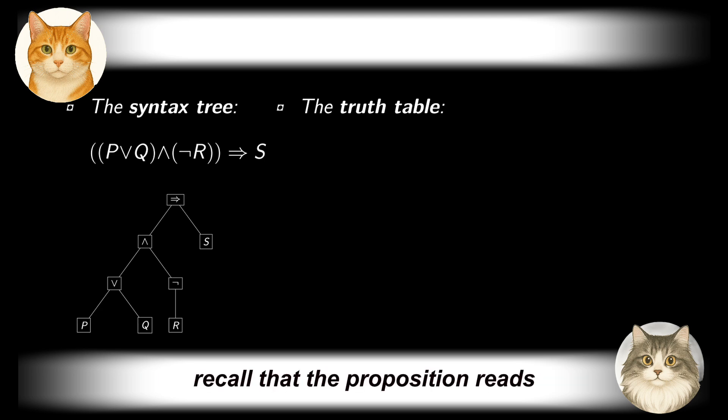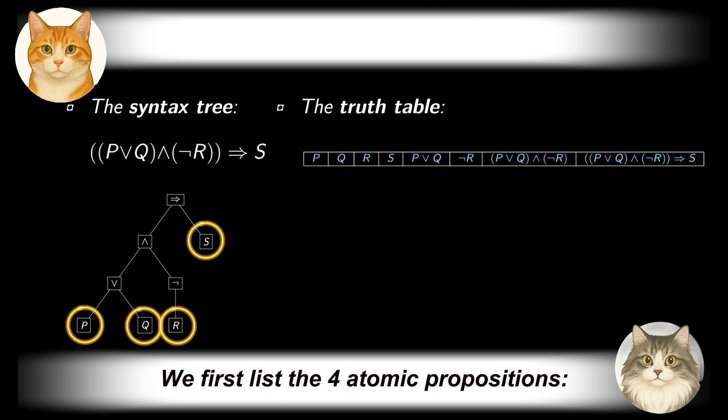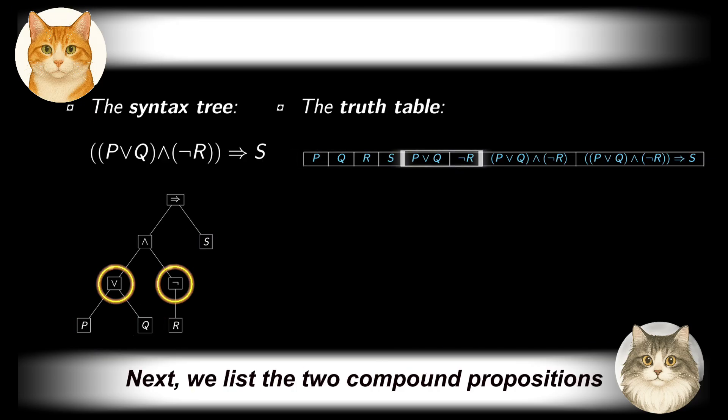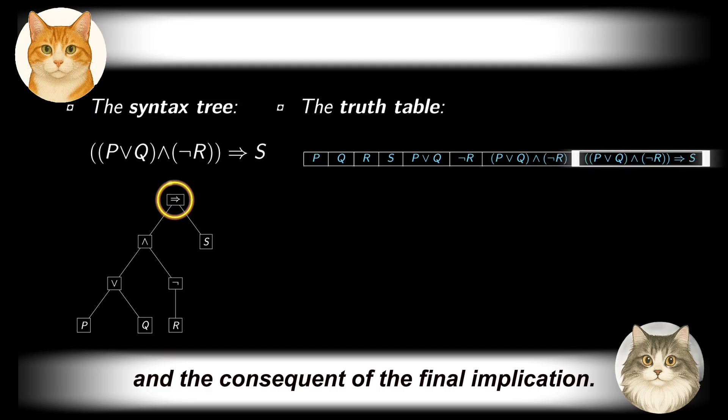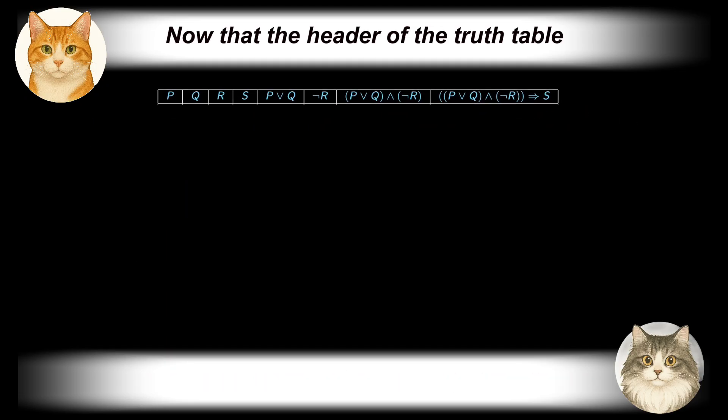Recall that the proposition reads: P or Q and not R implies S. We first list the four atomic propositions P, Q, R and S. Next, we list the two compound propositions at the first level: P or Q and not R. Then, we list the compound proposition at the next level: P or Q and not R, which together with S serves as the antecedent and the consequent of the final implication. Now that the header of the truth table is fully laid out, we move on to listing all combinations of truth values for the atomic propositions.